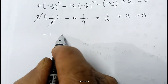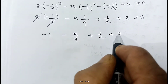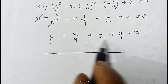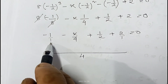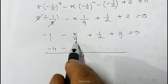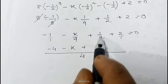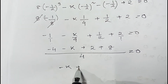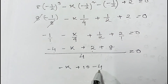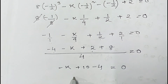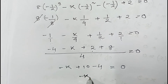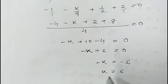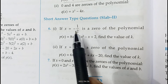Simplifying: minus 1 minus k/4 plus 1/2 plus 2 = 0. Taking LCM of 4, multiplying through: minus 4 minus k plus 2 plus 8 = 0, giving minus k plus 6 = 0, so minus k = minus 6, therefore k = 6. The required value of k is 6. The second part you can do in the same way.